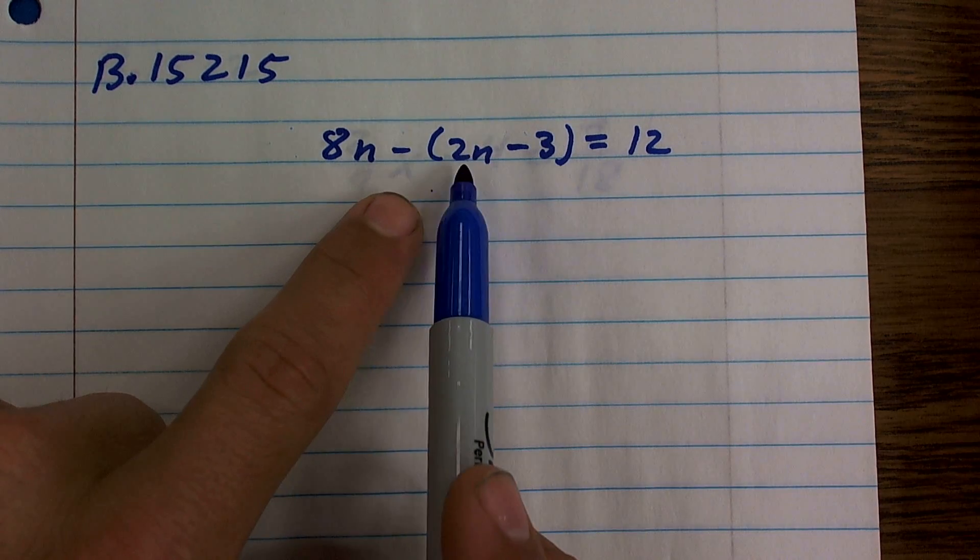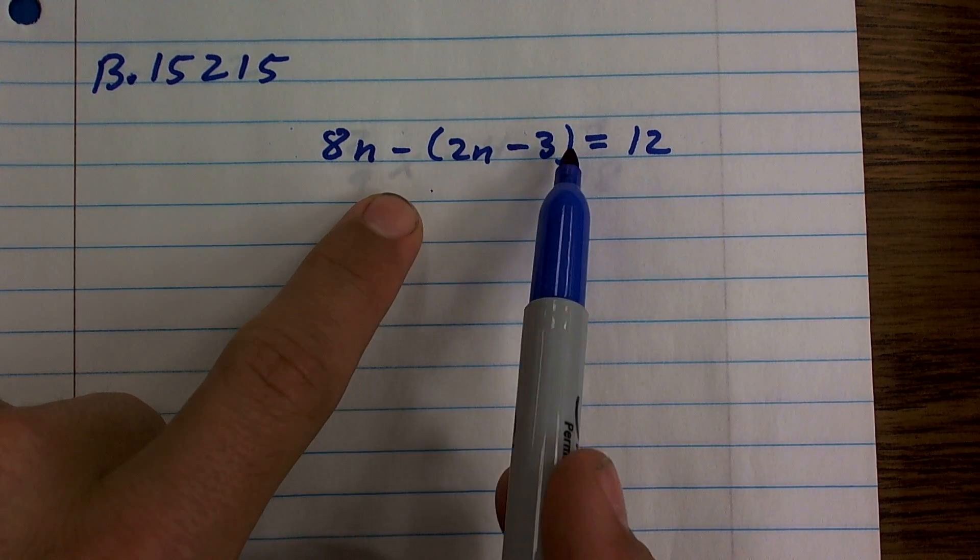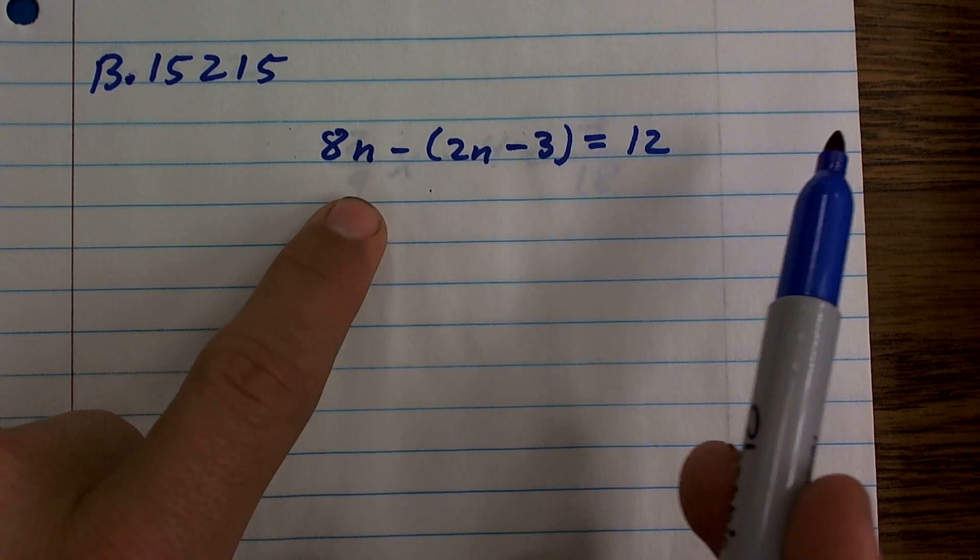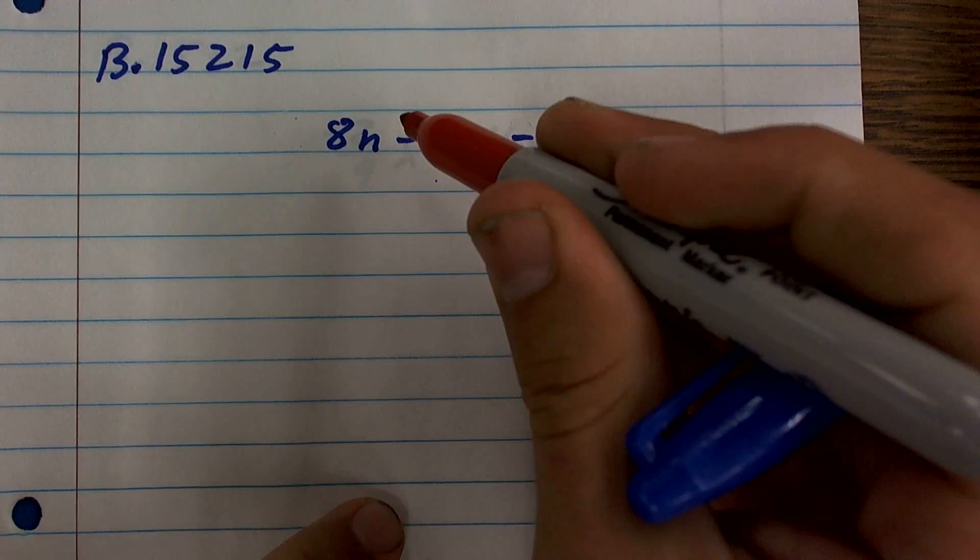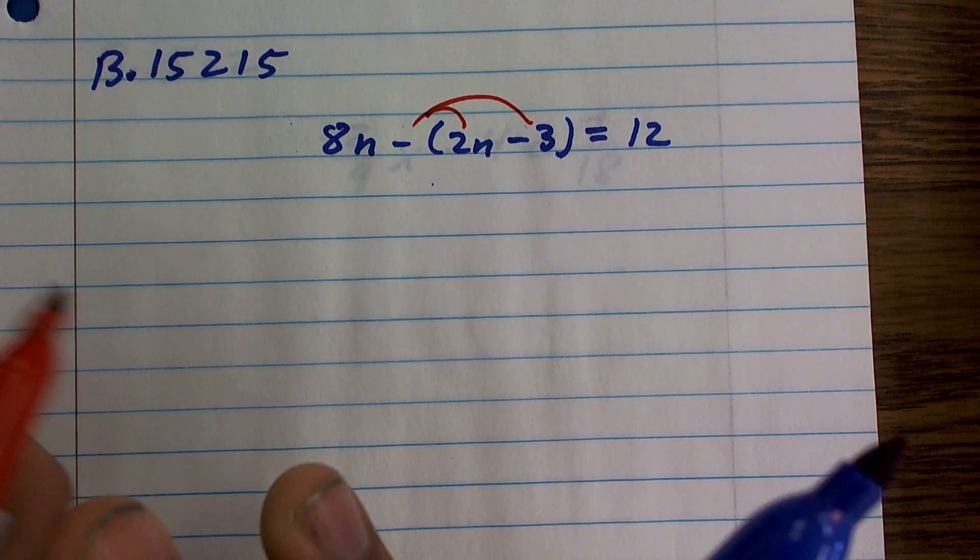It's minus 2n and a negative 3. So what we need to do before we can combine these terms is I need to distribute that negative sign or what we like to just call the negative 1.